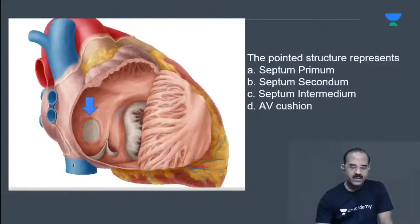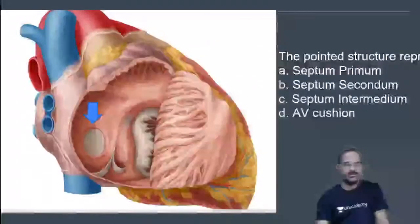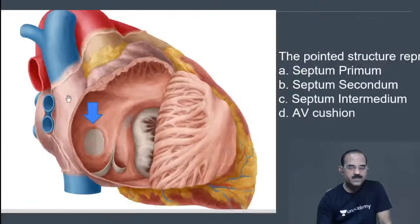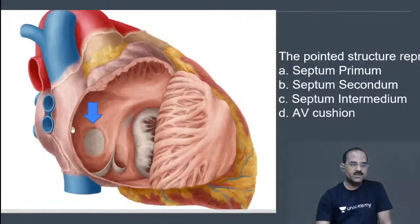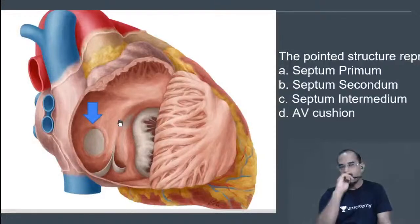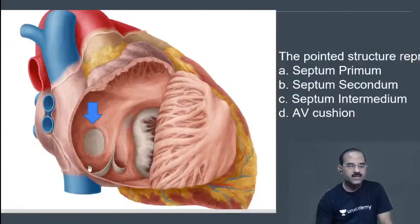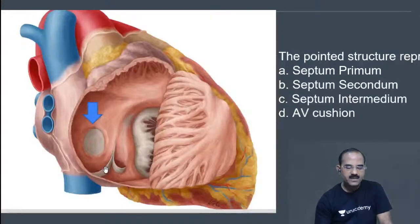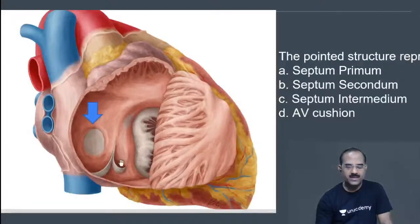We have opened the right atrium here. A line joining the SVC to IVC from outside is the sulcus terminalis, and from inside it is the crista terminalis. The crista divides the right atrium into a rough part and a smooth part. The smooth part shows three openings: SVC, IVC — guarded by the eustachian valve — and the coronary sinus, guarded by the thebesian valve.